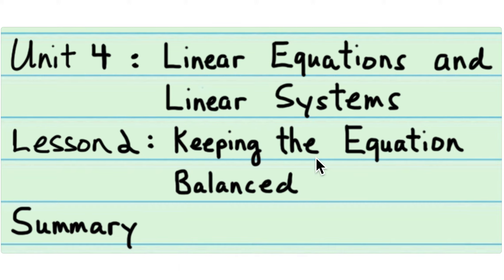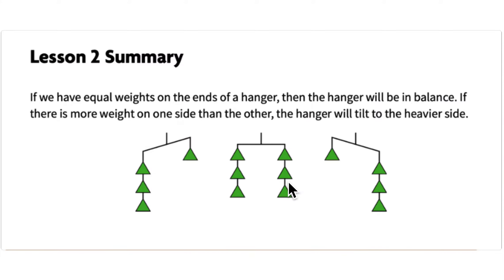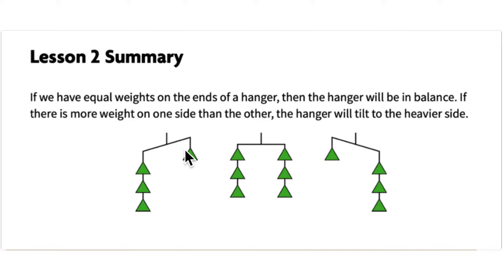This is the summary for lesson two: keeping the equation balanced. We've been using hangers to visualize equations being balanced. The hanger can be balanced, meaning the same weight on each side, or it can be unbalanced, meaning more weight on one side, causing it to tilt toward the heavier side.